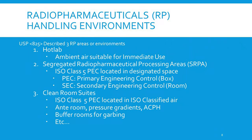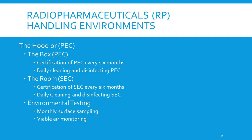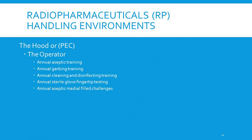Clean room suites have an ISO Class 5 PEC located in ISO-classified air, with anteroom pressure gradients, buffer rooms, and garbing requirements. PEC certifications are required every six months along with daily cleaning and disinfecting. The SEC also requires certification every six months, plus cleaning, disinfecting, and monthly surface sampling for microbial growth and viable air monitoring. Operators must have annual aseptic training, garbing training, cleaning and disinfecting training, annual sterile glove fingertip testing, and annual aseptic media fill challenges.